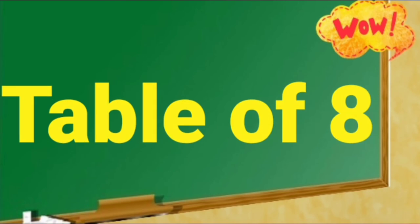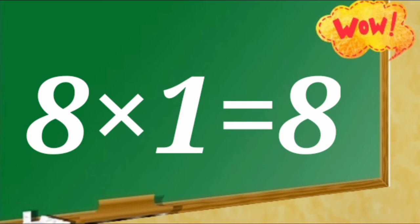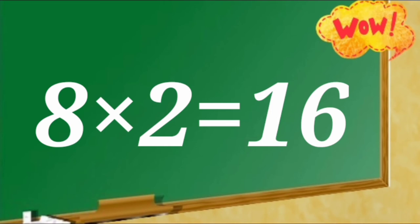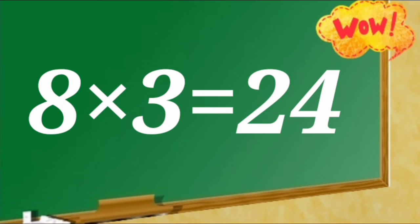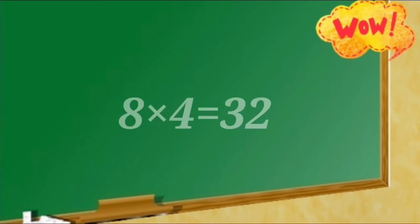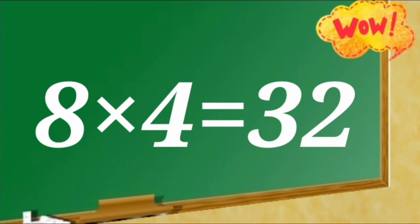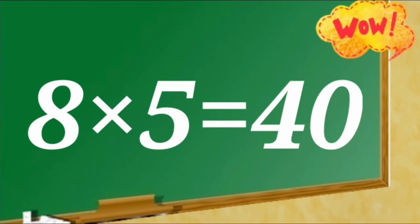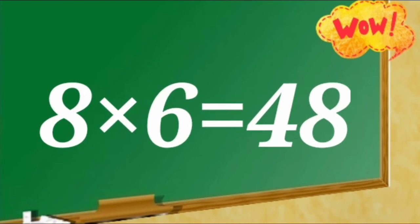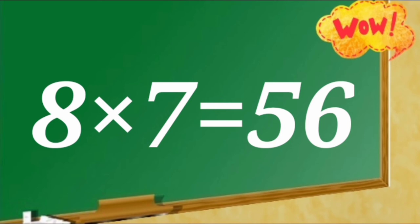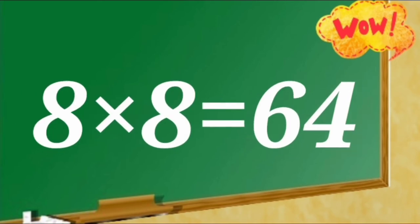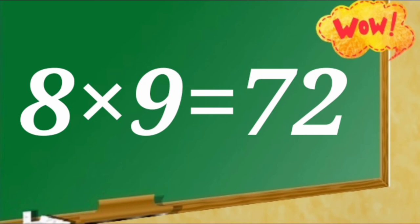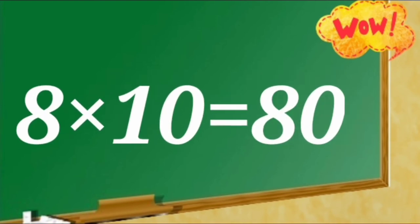Table of 8. 8 ones are 8, 8 twos are 16, 8 threes are 24, 8 fours are 32, 8 fives are 40, 8 sixes are 48, 8 sevens are 56, 8 eights are 64, 8 nines are 72, 8 tens are 80.